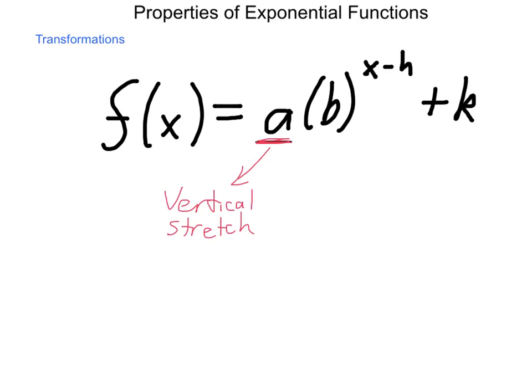If a is a value greater than 1, it becomes taller. If it's between 0 and 1, it acts as a compression, it shrinks it. And if a is less than 0, it will reflect across the x-axis.